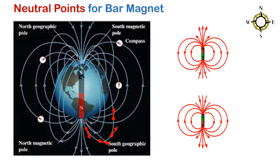This is the direction of the magnetic field at various points along the magnetic field lines surrounding the earth. This is the direction of the magnetic field at various points surrounding this magnet, and similarly for this magnet which is pointing in the southward direction.